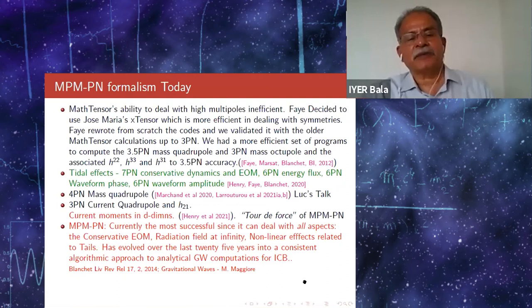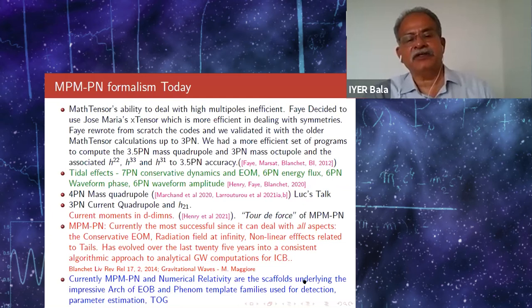To conclude this particular part, the MPMPN formalism is currently the most successful since it can deal with all aspects: the conservative equation of motion, the radiation field at infinity, the nonlinear effects related to tails. It has evolved over the last 25 years into a consistent algorithmic approach to analytical gravity wave computations for inspiraling compact binaries. Currently, the MPMPN and numerical relativity are the scaffolds which underlie the impressive arch of the effective one-body and phenom template families, which are used for detection, parameter estimation, and tests of gravity, which you heard in Alessandra's talk yesterday.